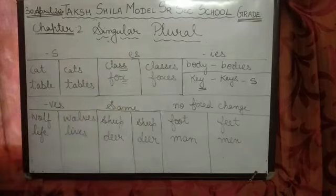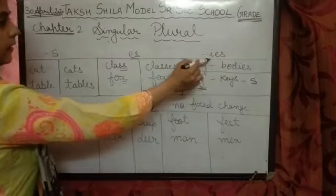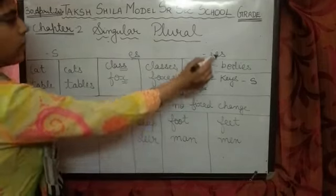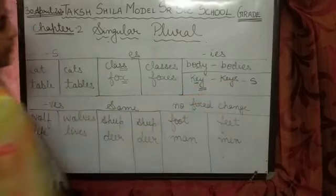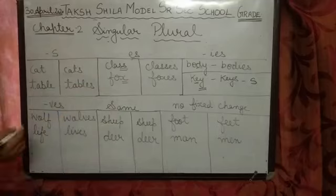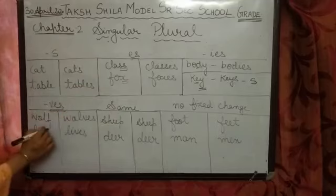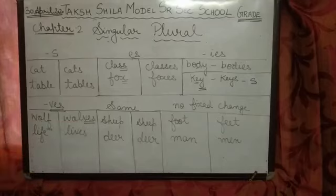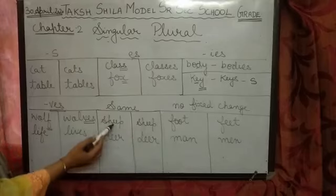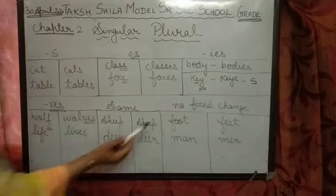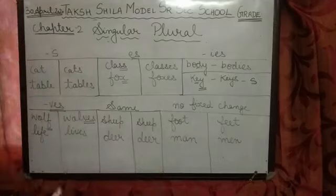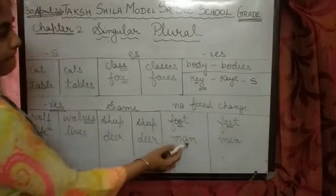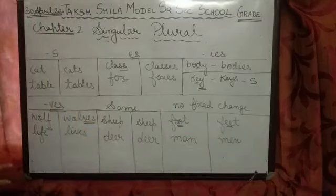Let's review with a summary table. Adding IES: body becomes bodies by adding IES. Y is replaced by I and ES is added because there is a consonant before Y. If it is a vowel before Y, we simply add S — for example, key becomes keys. For VES: words ending with F are replaced by VES — wolf becomes wolves, life becomes lives. Same form means no change — sheep stays sheep, deer stays deer. And for irregular changes, like foot becomes feet, where the double O changes to double E — the vowels have been changed. Similarly, man becomes men. I hope this table makes the formation of plural clear to you. Thank you.